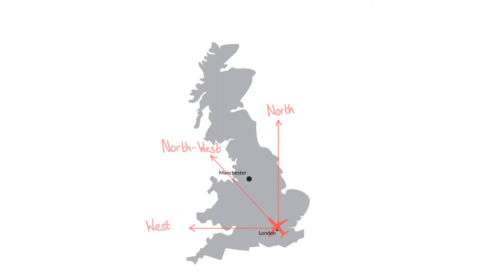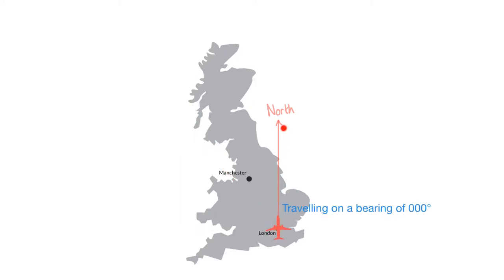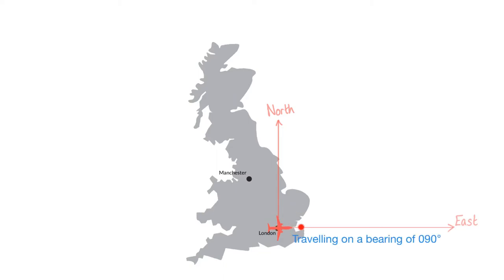We take our starting point, London. If we travel straight north we call that travelling on a bearing of 000 degrees, because it is 0 degrees clockwise from north. If we travelled east from London we would call that travelling on a bearing of 090 degrees, because that is turning 90 degrees clockwise from facing north at our starting point.